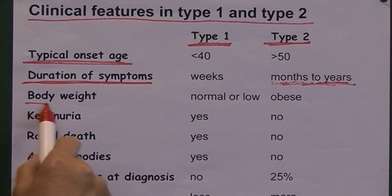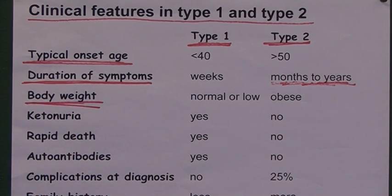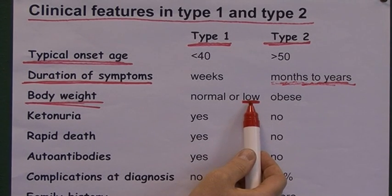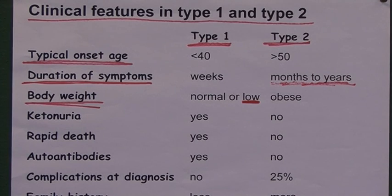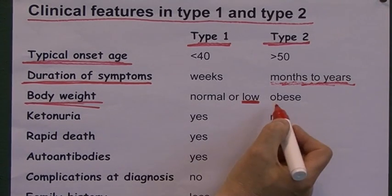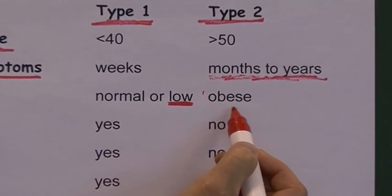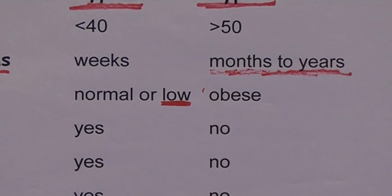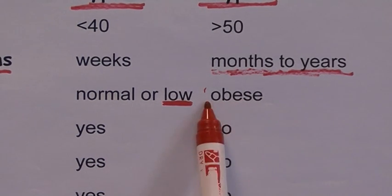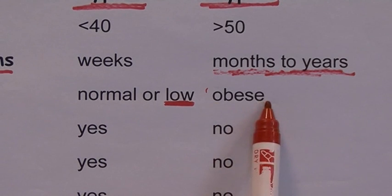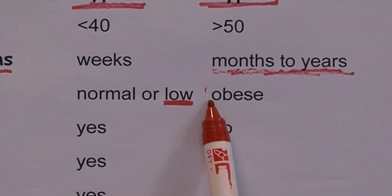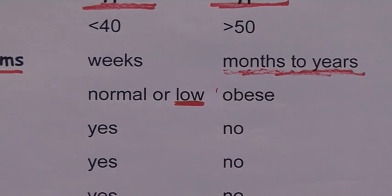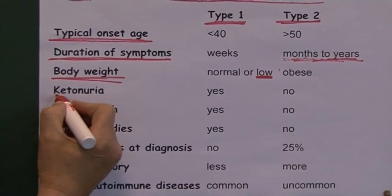Regarding body weight: in type 1 diabetes, weight is typically normal or the patient will have lost weight — usually patients have lost some weight by the time they're diagnosed. In type 2 diabetes, patients are very often overweight. It's not an invariable rule, but most patients with type 2 diabetes are overweight at presentation.